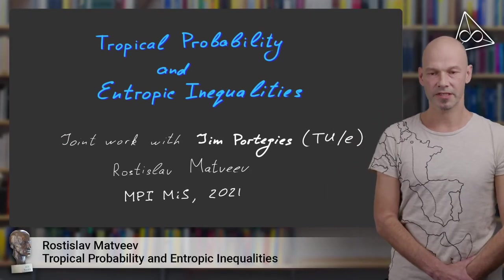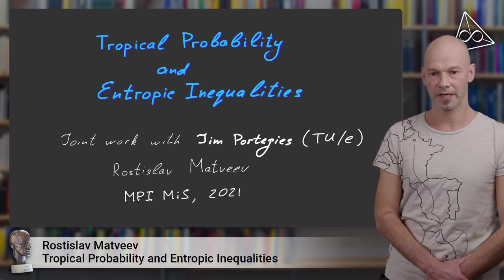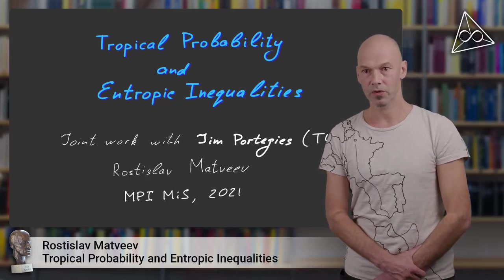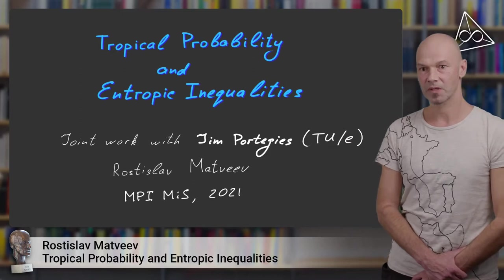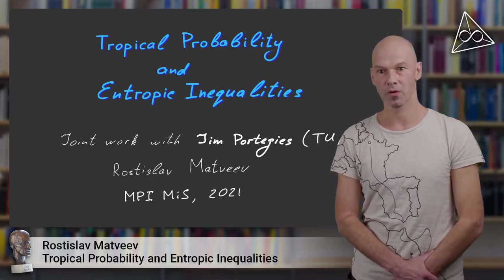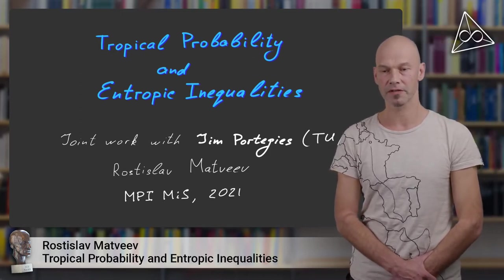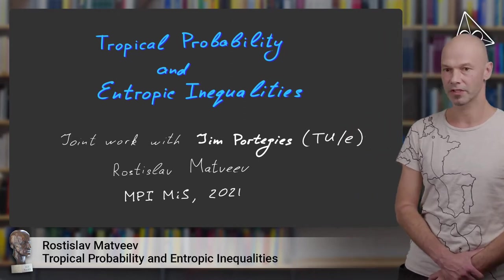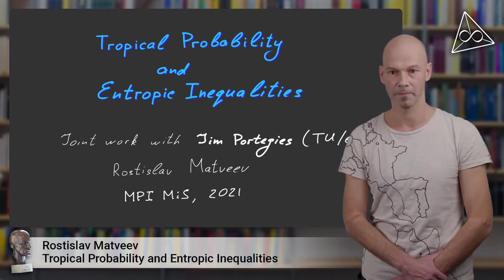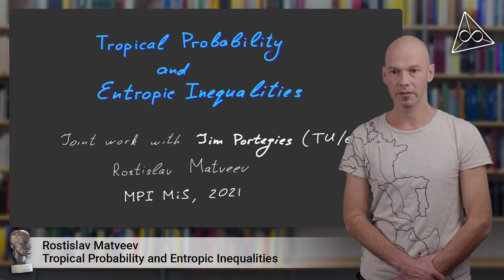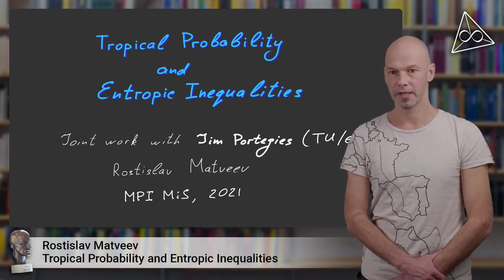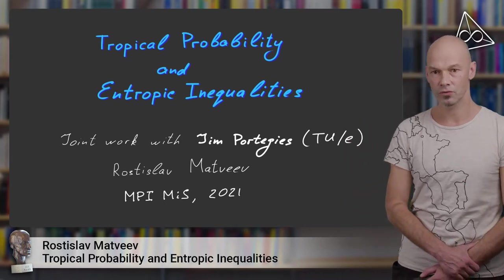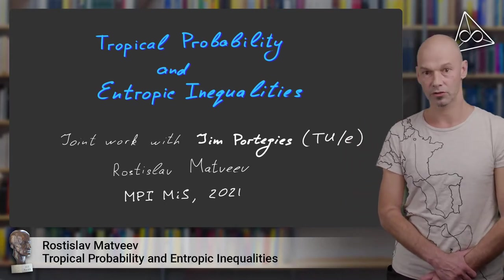Hello, my name is Rostislav Matveyev. I'm a member of the group of Jörgen Joost, and today I will report on my work on tropical probability theory, which is a joint project with Jim Pertegis from Technical University in Eindhoven. Along the way I will also present an application of our newly developed theory to entropic inequalities.